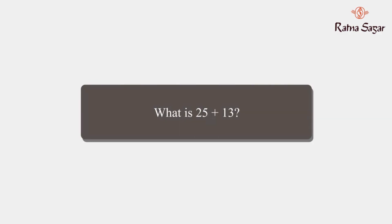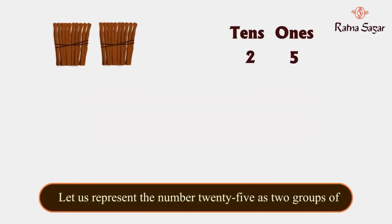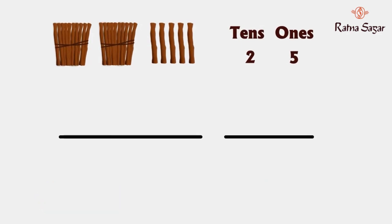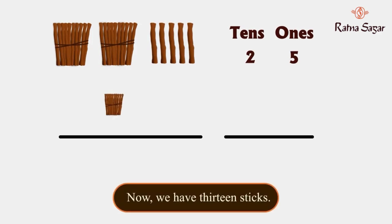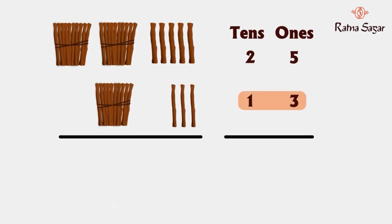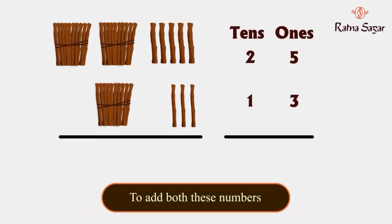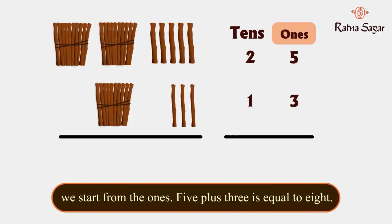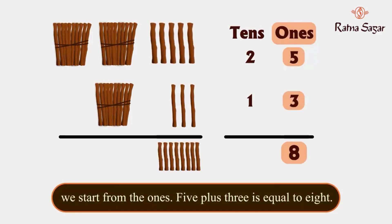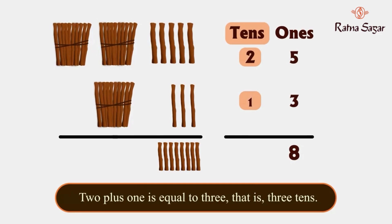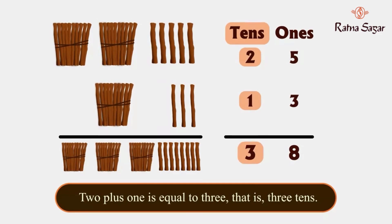Let us try another example. What is 25 plus 13? Let us represent the number 25 as two groups of tens and five loose sticks. Now we have 13 sticks, which means we have three ones and one ten. To add both numbers, we start from the ones: 5 plus 3 is equal to 8. Now we add the tens: 2 plus 1 is equal to 3, that is three tens.